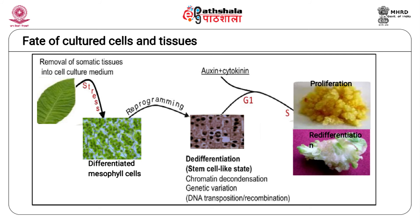Depending on the ratio of auxins and cytokinins added to the culture medium, the cells exit the de-differentiation state and may either proliferate to form an undifferentiated callus mass or may show re-differentiation to form new shoot buds. Hence, cultured cells may show pluripotency dependent on the growth hormone concentrations used. In the absence of growth hormones, the fate of the de-differentiated cells leads to cell death.